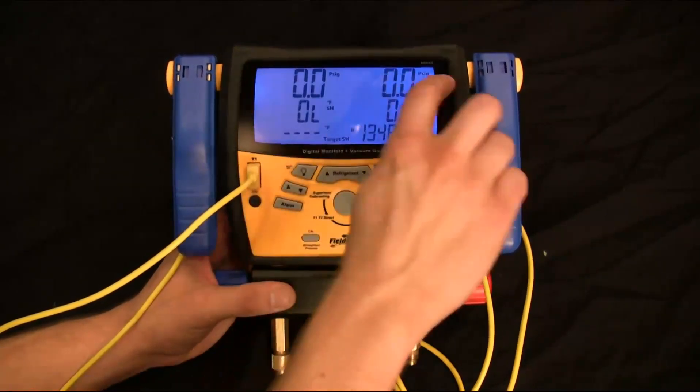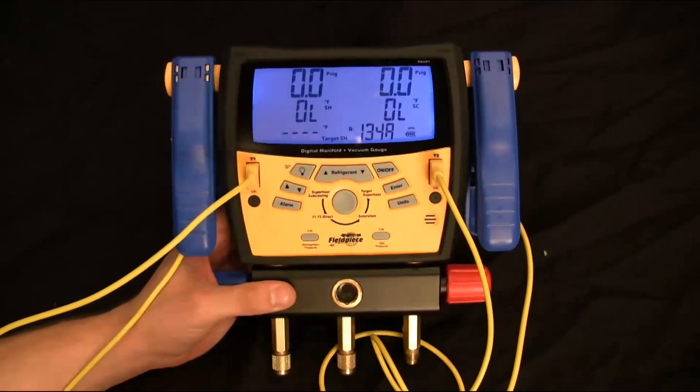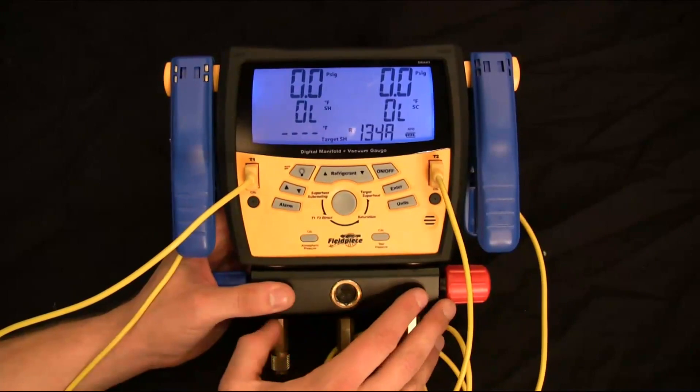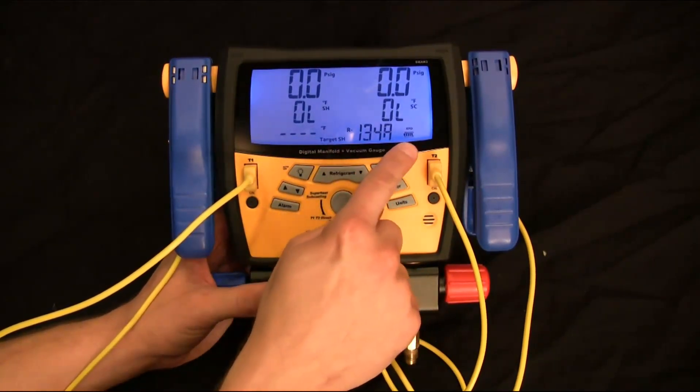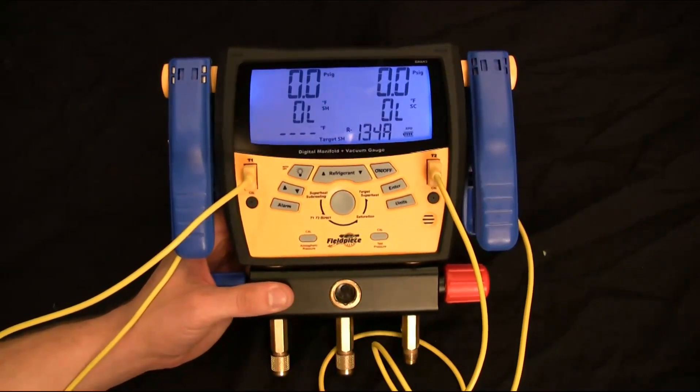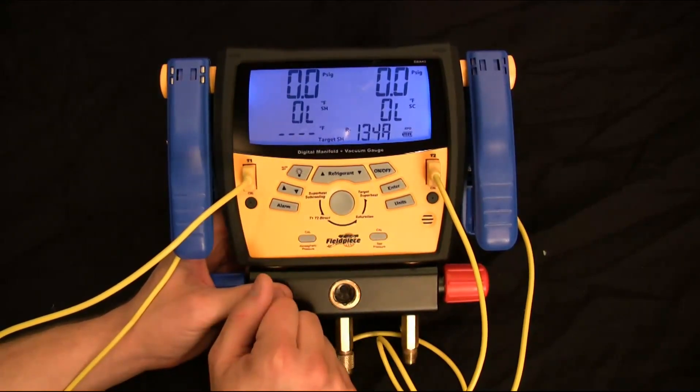Now, on the display, the top line is always going to be your pressures. The bottom line is always going to be the temperature mode and usually displaying the temperatures, but depending on what mode, it'll display a different type of temperature. And the bottom line is always going to have your refrigerant in there, but depending on what mode you're in, you might have other things in display as well. So let's go over the modes.